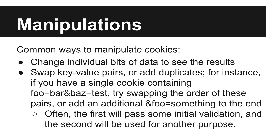Here are a few common manipulations you'll want to try with cookies. Change individual bits of data and see what changes — this is especially valuable when dealing with an encoded binary blob, like in the case of encrypted cookies. It's also useful to try swapping or duplicating key-value pairs in cookies. These types of cookies aren't very common anymore, but you'll occasionally still see them, and these techniques can allow you to pass through validation unchecked in many cases.